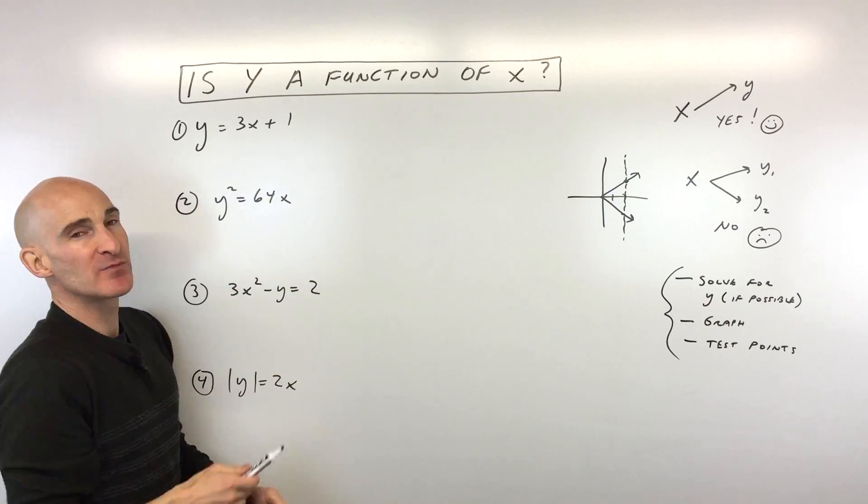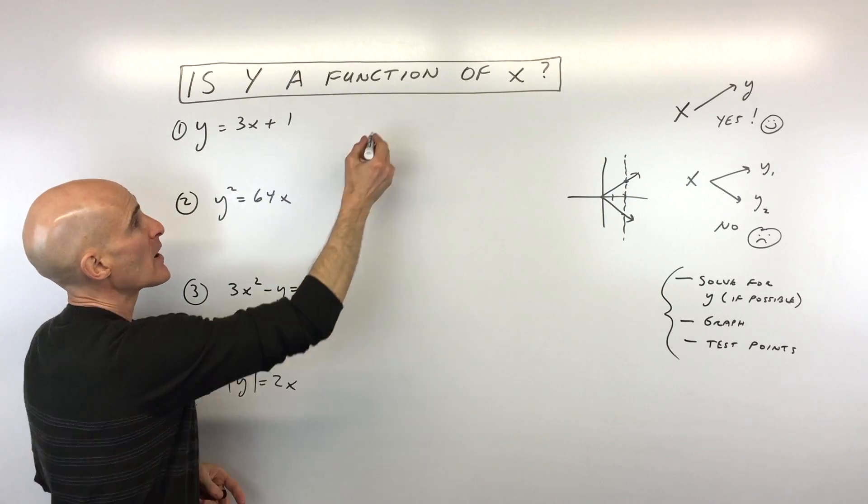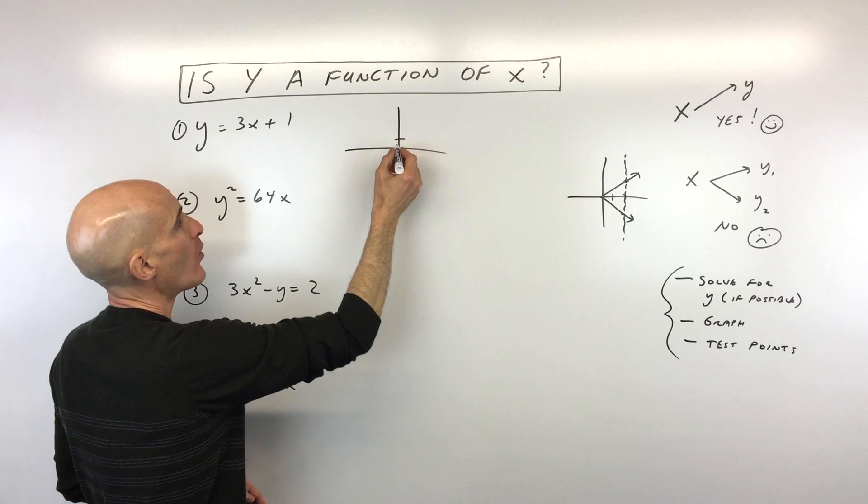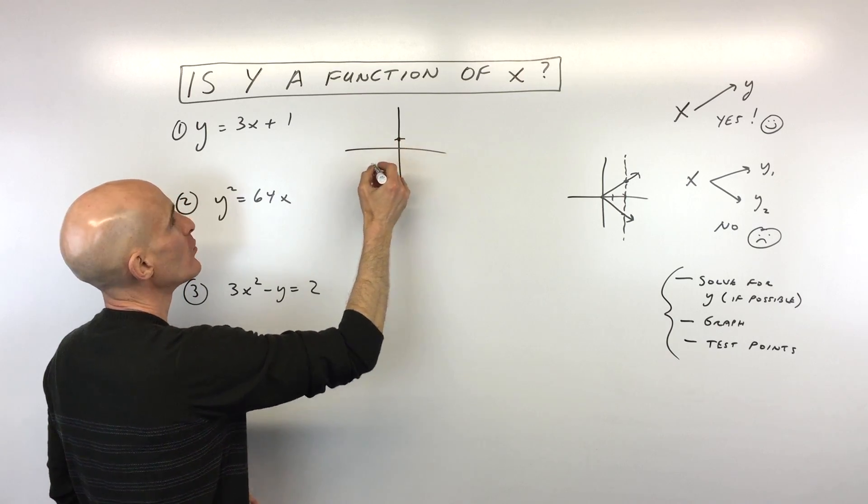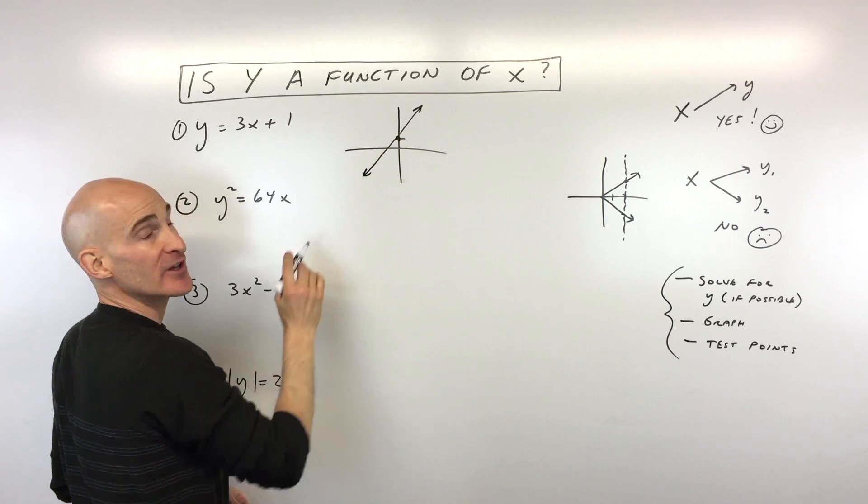So say for number one, y equals 3x plus 1. Well, we know what y equals 3x plus 1 looks like, right? It's a y-intercept of 1 and it has a slope of 3. So it's looking something like that, approximately, right?